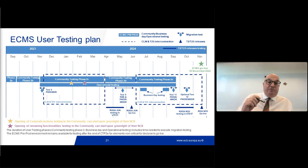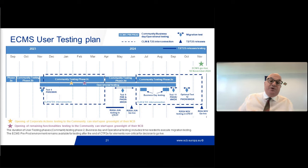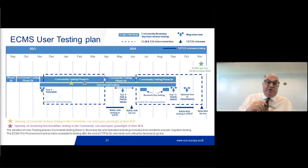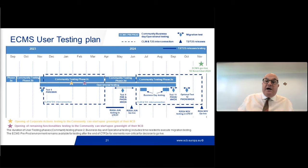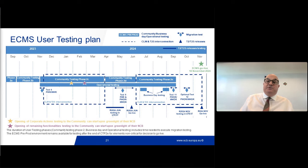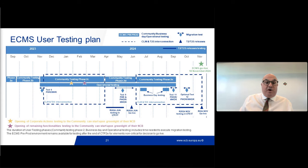During April and May, the T2S and T2 community are testing CLM and T2S in the manner it will be in June, which is not connected to the ECMS service — that's why we disconnect. Then in June we will reconnect. What you need to look at in June is a very important testing phase: the business day testing. This is where we will run a live timing schedule — the same schedule as in production. In the test environment currently, the end-of-day process takes place a little bit earlier, but this will not be the case during business day testing in July and August.